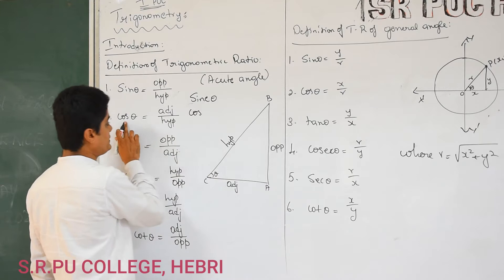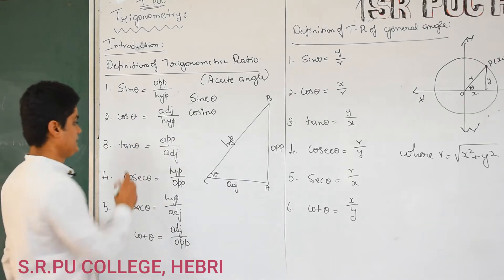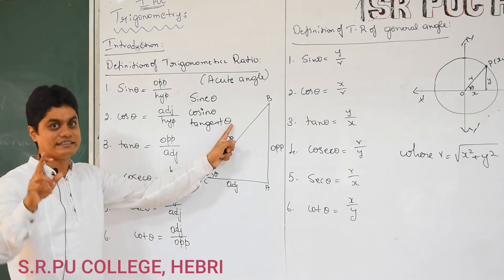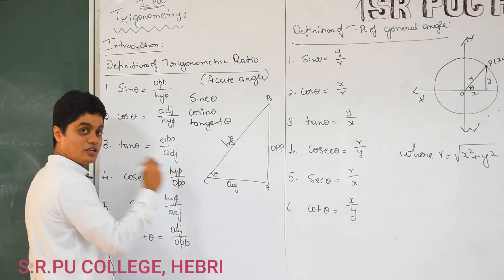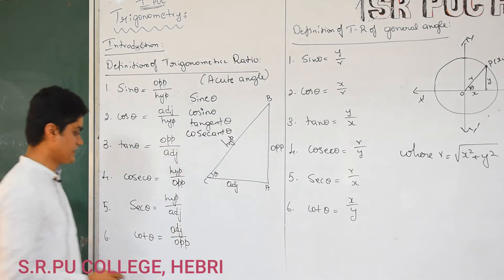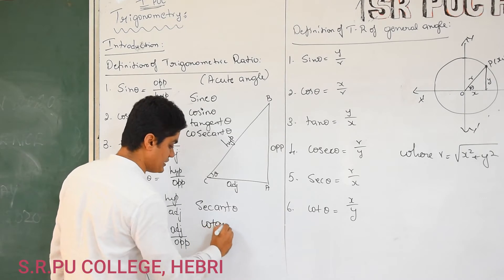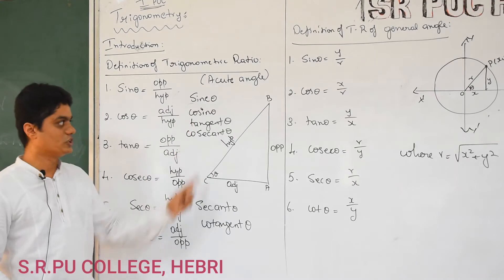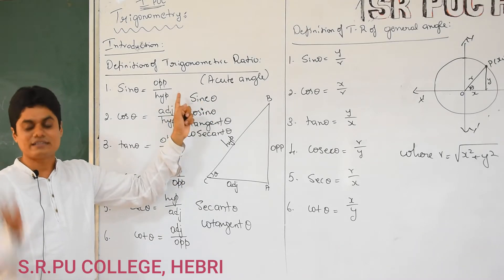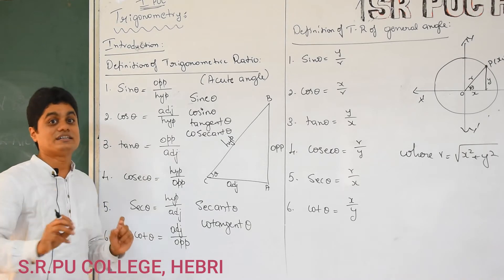Cos theta — the full form is cosine. In short we write cos theta. Tan theta — the full form is tangent. Tangent of an angle, in short it is tan theta. Cosecant theta — the full form is cosecant, C-O-S-E-C-A-N-T. In short we call cosecant theta. Secant theta, in short sec theta. And the last one is cotangent — in short we write cot theta. So these are the six trigonometric ratios.